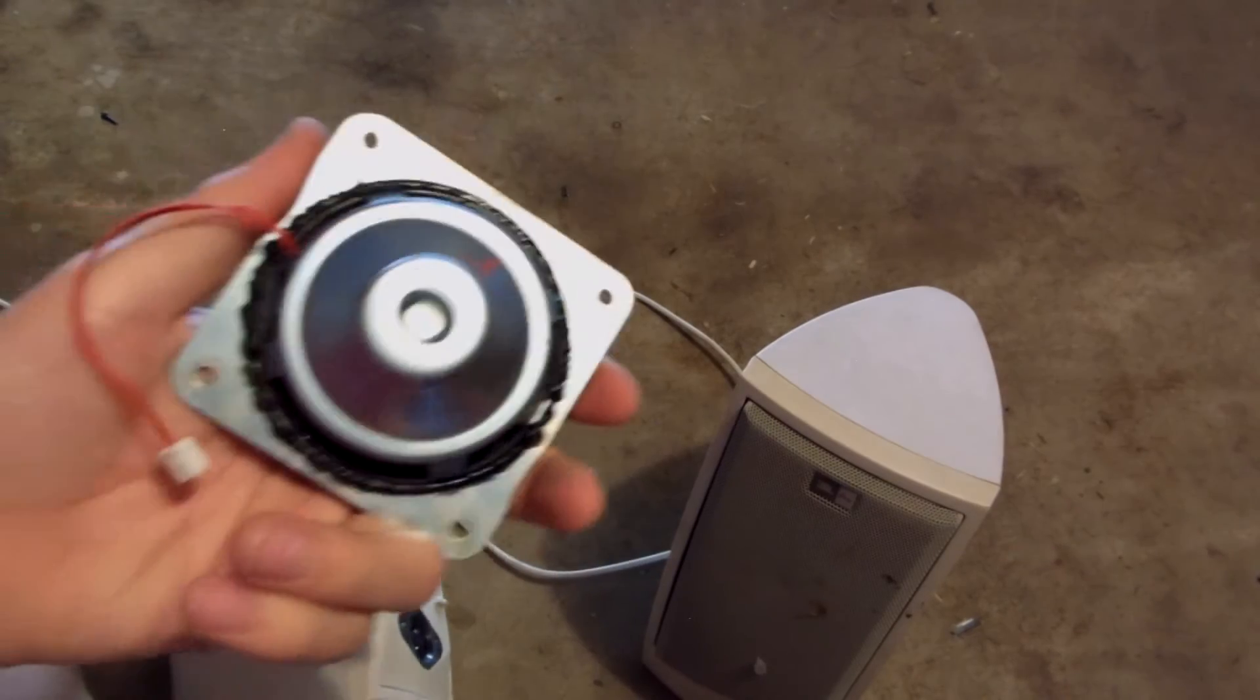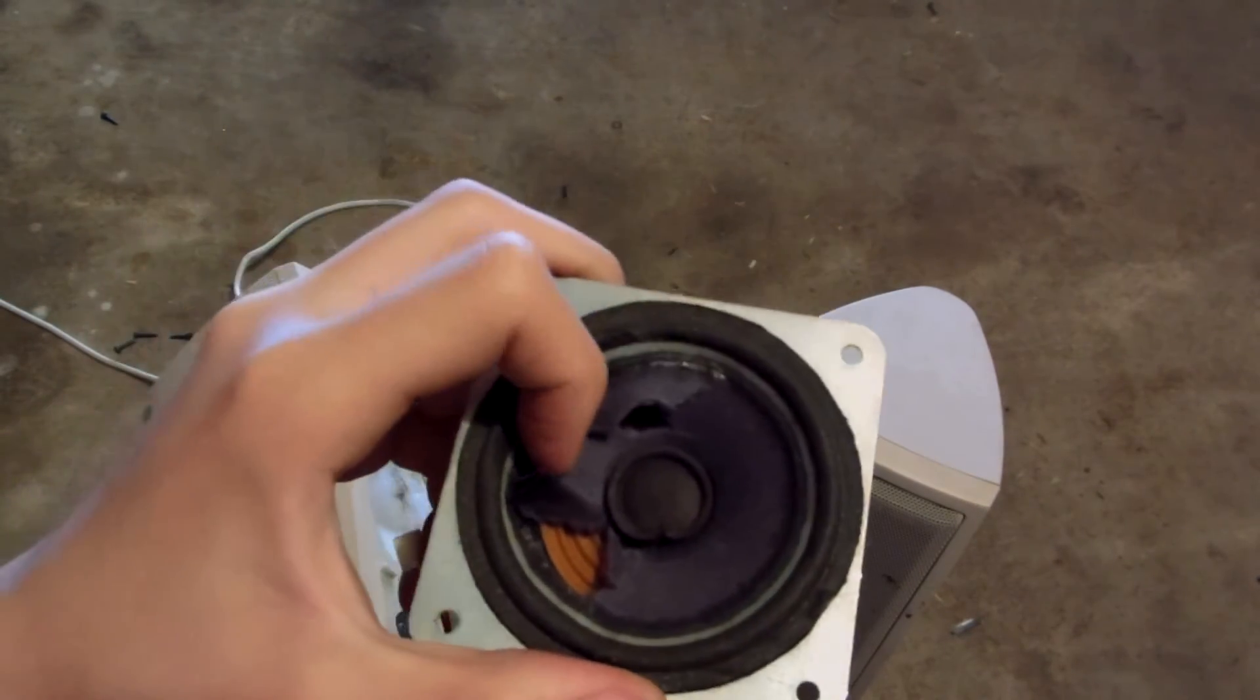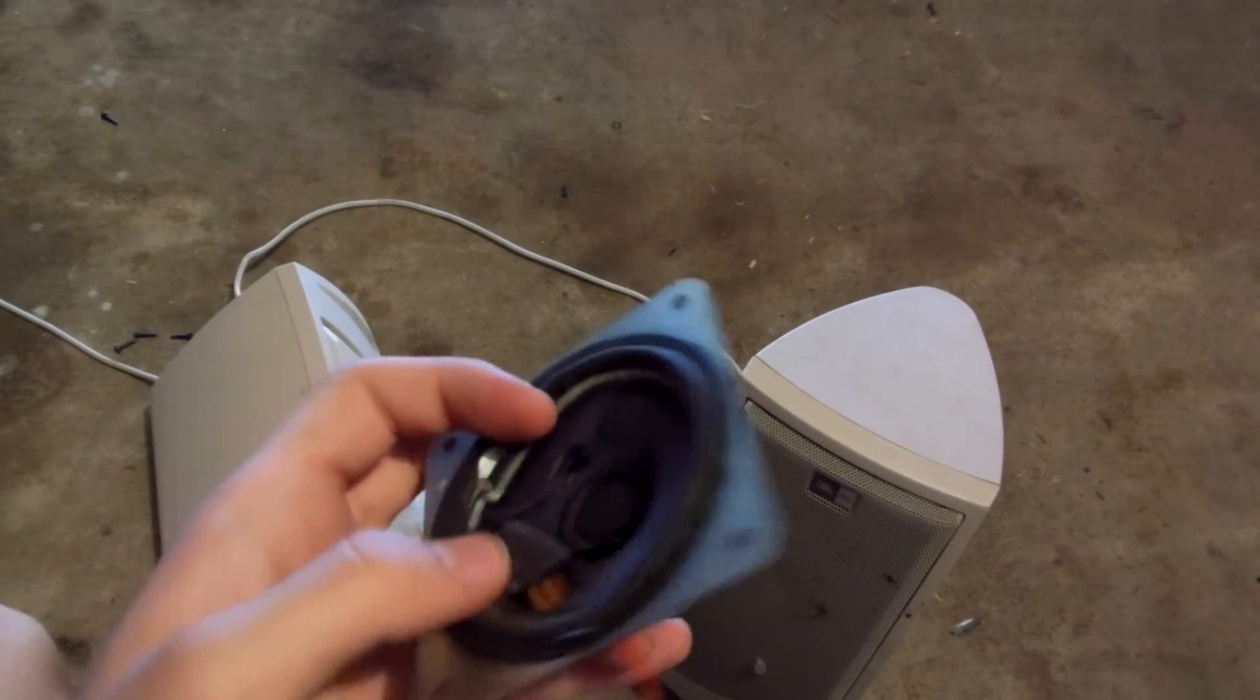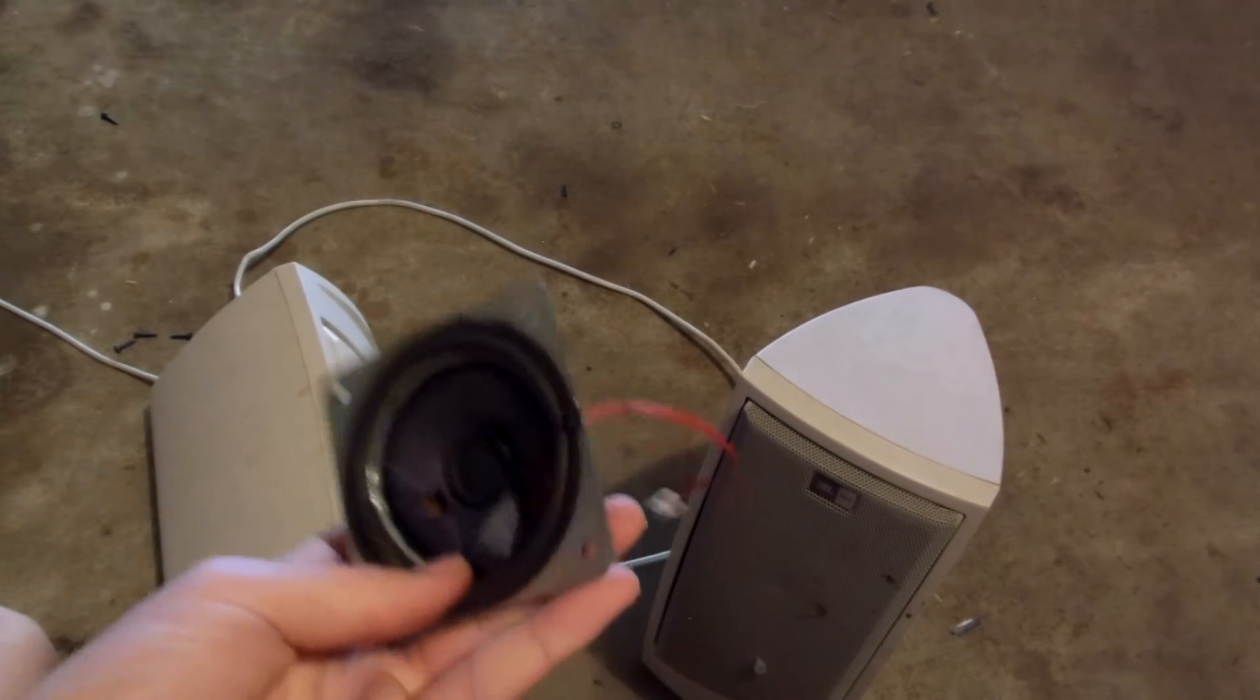So here we are going to access the speaker. You can see there is a little piece of copper in there and a little voice coil. Two pieces of copper that connect to this outer band here. If you remove those two, then you are pretty much good to go.